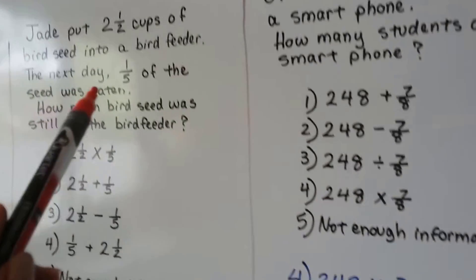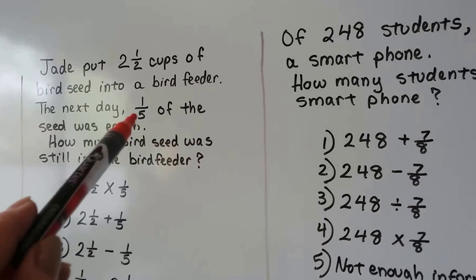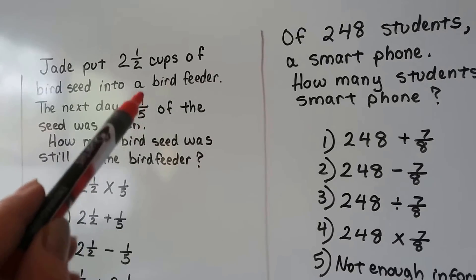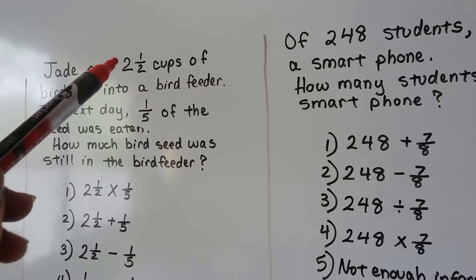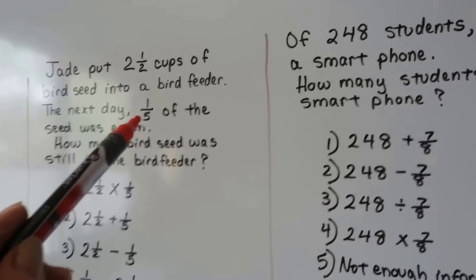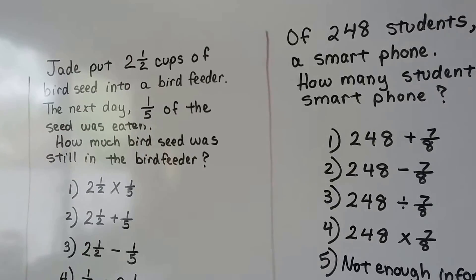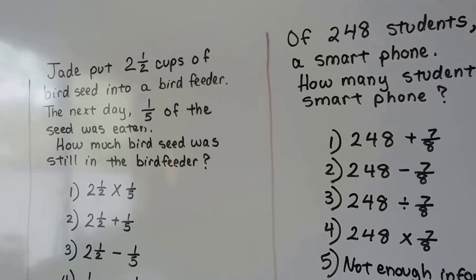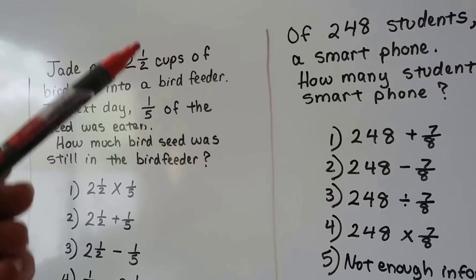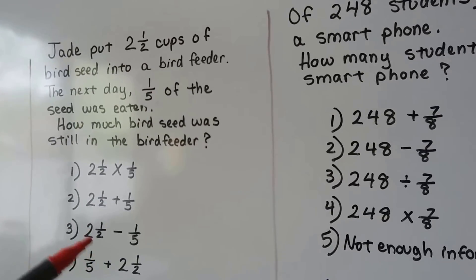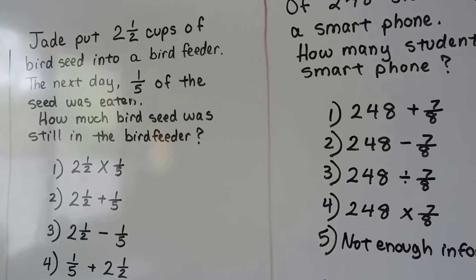And even in a problem like the bird feeder one, instead of one fifth, tell yourself there's a one there and that's just a two. If she put two cups into the bird feeder and the next day one cup was gone, well, that means one cup's left, right? That was a subtraction problem. Then you can put the fractions back in and solve it for real because at least now you know what operation to use. Okay?